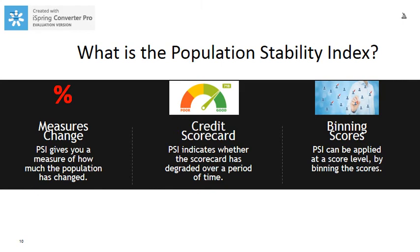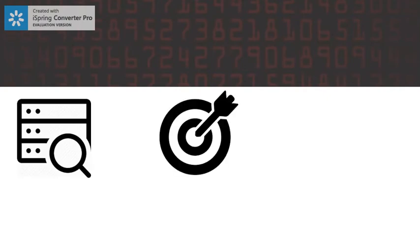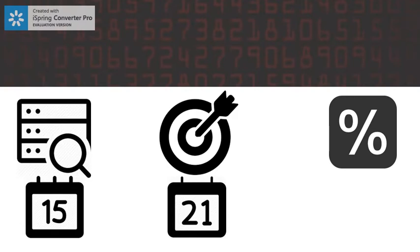So now getting into real business — what is the Population Stability Index? PSI gives you a measure of how much the population has changed over a period of time. It also indicates whether a scorecard has degraded over a period of time. PSI can be applied at the score level by binning the scores — meaning transforming numeric characteristics into categorical ones — as well as regrouping and consolidating categorical characteristics. For example, if you have data about a group of people, you may want to arrange their ages into a smaller number of age intervals. So coming back to PSI, we have a base data and a target data in hand, both at different time periods. A simple exercise is to find the percentage change in the population over the different time periods.